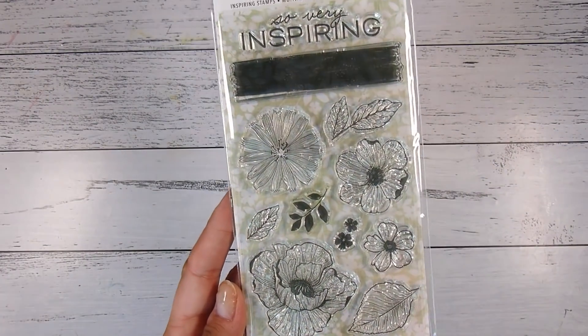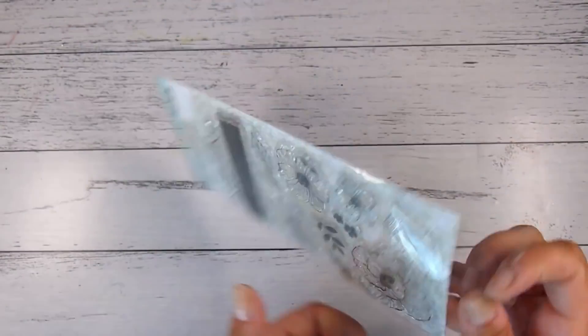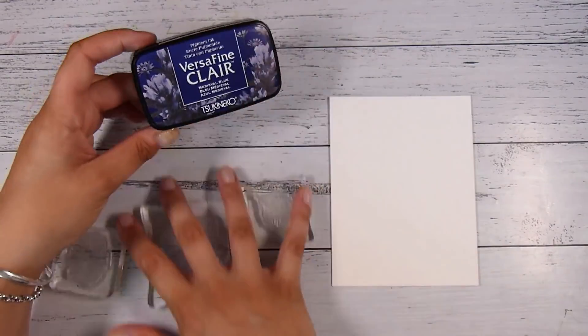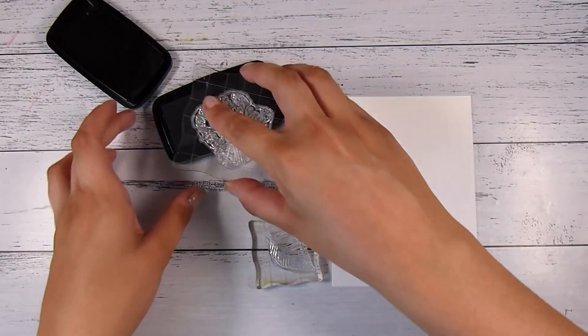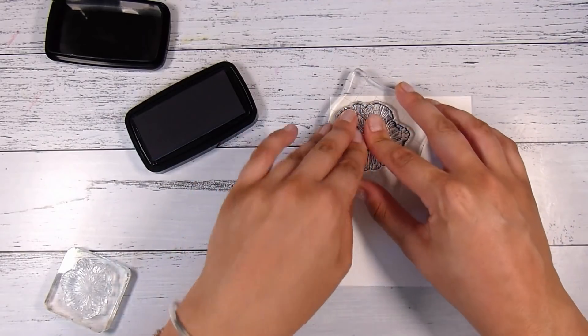This is the stamp set that is going to be focusing on. This is called Inspiring by Vicky Boutin. This is a cheaper, lower price point - I think maybe six US dollars for the stamp set and it's gorgeous.